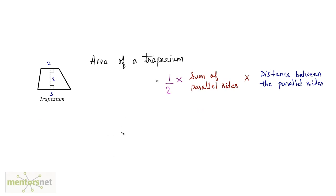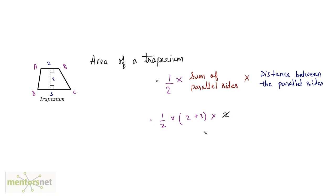What is the area of a trapezium? This formula is a bit more complicated: half into the sum of parallel sides into the distance between the parallel sides. Let us name the vertices A, B, C, and D. AB and CD are the parallel sides. So we have half into (AB + CD) times the height. That is half into (2 + 3) times 2. The half and the 2 cancel out, giving us 1 into 5 into 1, which is 5 square centimeters.